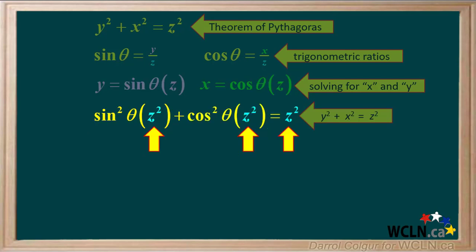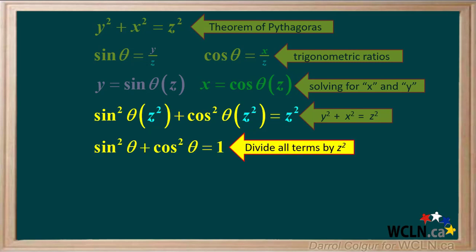Notice all three terms have z squared in common. Dividing all three terms by z squared gives us sin squared theta plus cos squared theta equals 1.